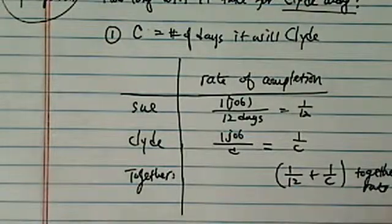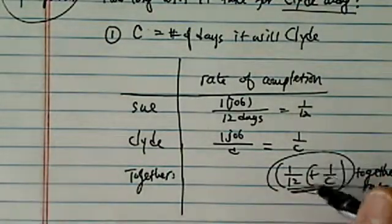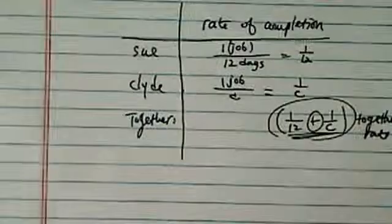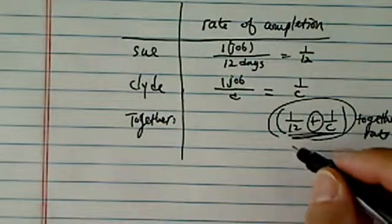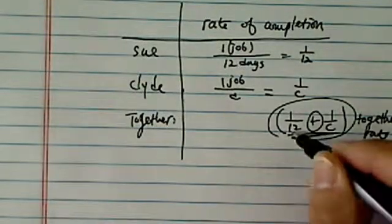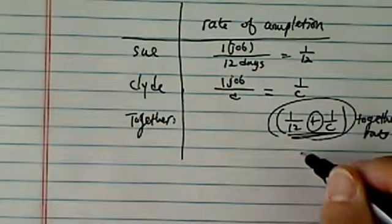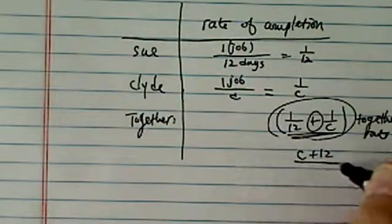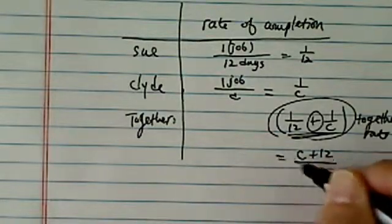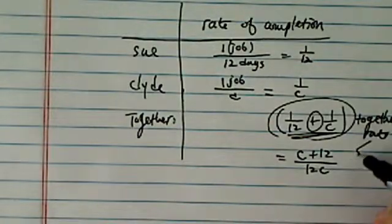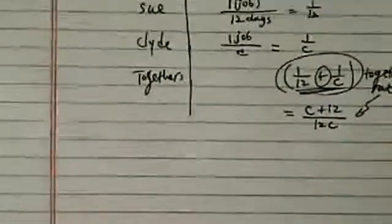The job rates are added together. Let's combine this into one fraction — the common denominator is 12C, so we have C plus 12 divided by 12C. This is the together rate. Now we're going to hold on to this.